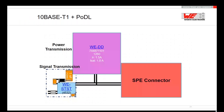Here we can see the footprint of the whole system. On the right-hand side is the single-pair Ethernet connector; on the left is the signal transmission schematic. The most dominant component is the differential mode choke. It is large because we need a very high inductance for low frequencies and, of course, the rated current — higher currents require larger wire diameters. Here the rated current is 1.5 amps, which is suitable for 60-watt power over data line, making this part quite large.